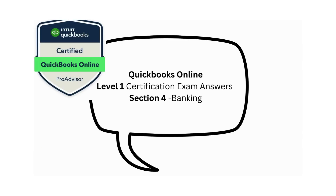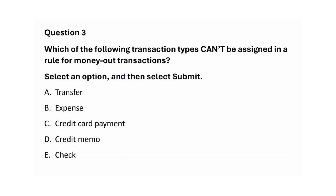Exam question: Which of the following transaction types can't be assigned in a rule for money out transactions? Select an option and then select Submit. A: Transfer. B: Expense. C: Credit card payment. D: Credit memo. The correct answer is D: Credit memo.